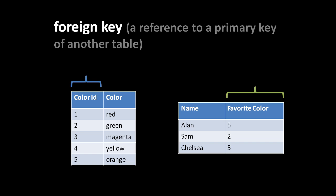Looking at the table of people, we have the name of each person and their favorite color. The favorite color column is a foreign key because it references the primary id of the color table. According to this data, Alan's favorite color is orange, Chelsea's is also orange, and Sam's favorite color is the one with id two — green. Primary keys and foreign keys are really what form the relationships between tables.